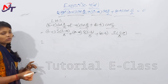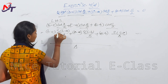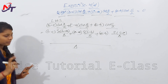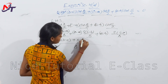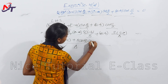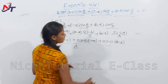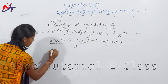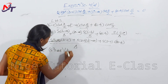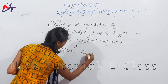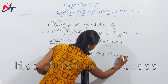Taking LCM = Δ, the expression becomes: [s(s-a)(b-c) + s(s-b)(c-a) + s(s-c)(a-b)] / Δ. Expanding: s(s-a)(b-c) + s(s-b)(c-a) + s(s-c)(a-b). Opening brackets: s·s(b-c) + s·(-a)(b-c) + s·s(c-a) + s(-b)(c-a) + s·s(a-b) + s(-c)(a-b).